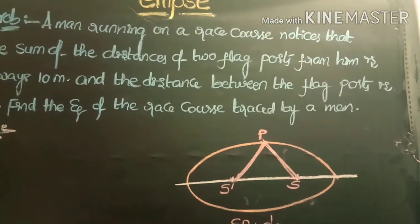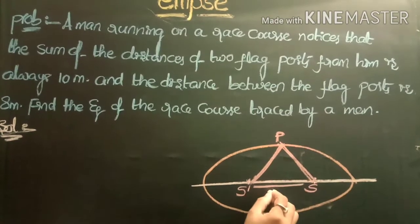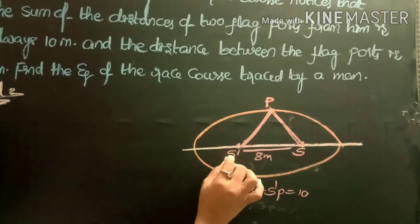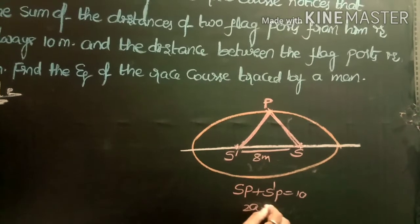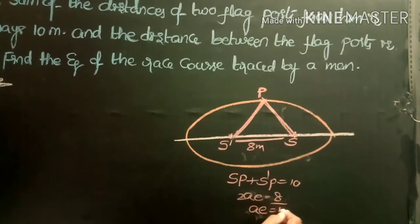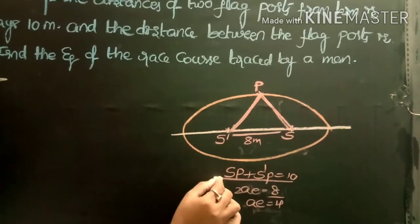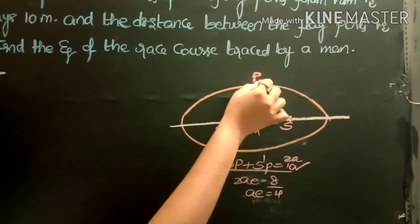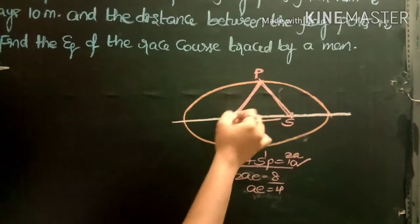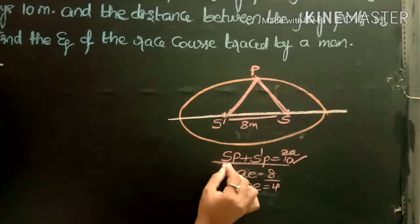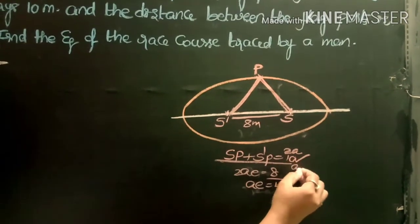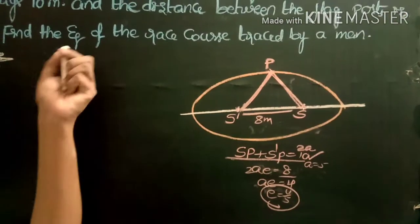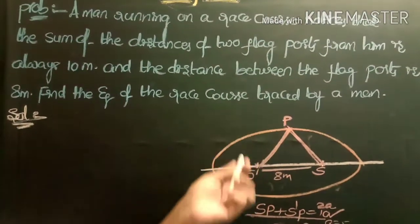Given SP + S'P = 10 and SS' = 8. Since S and S' are foci, SS' = 2ae. We know SP + S'P = 2a, so 2a = 10, giving a = 5. Also SS' = 2ae = 8, so ae = 4, giving e = 4/5.